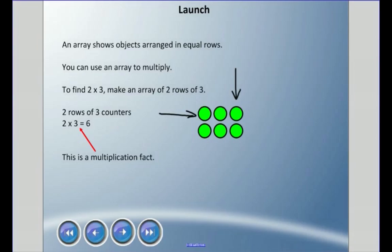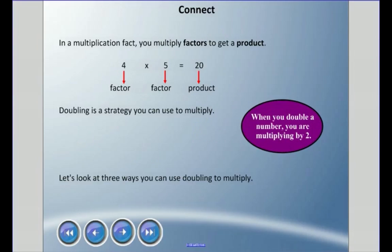Two rows of three is 6, and this is just a simple multiplication fact. In a multiplication fact, you multiply something called factors to get a product. So 4 times 5 equals 20, and 4 and 5 are factors of 20, and 20 is the product.